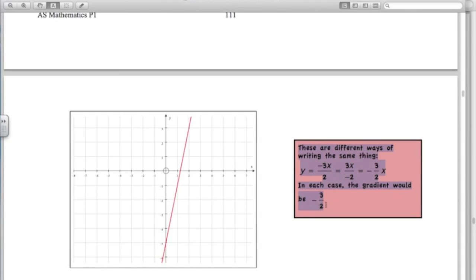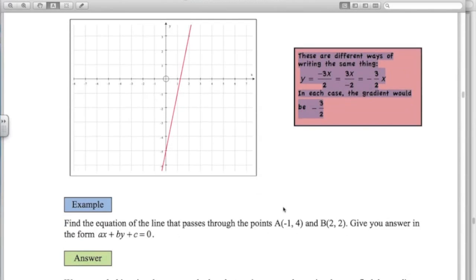In every case here, the gradient is negative 3 over 2. So I'd kind of think of it like down 3 and across 2 if you're looking at the gradient. Down 3 across 2.